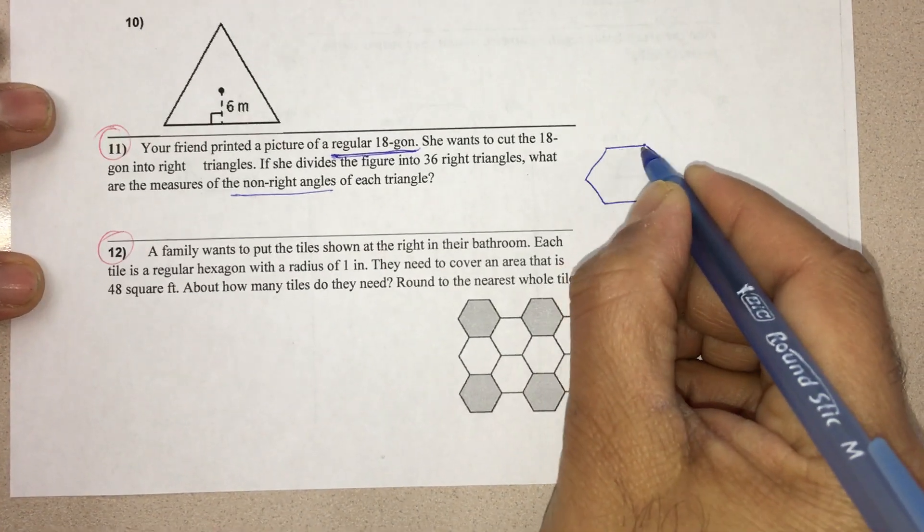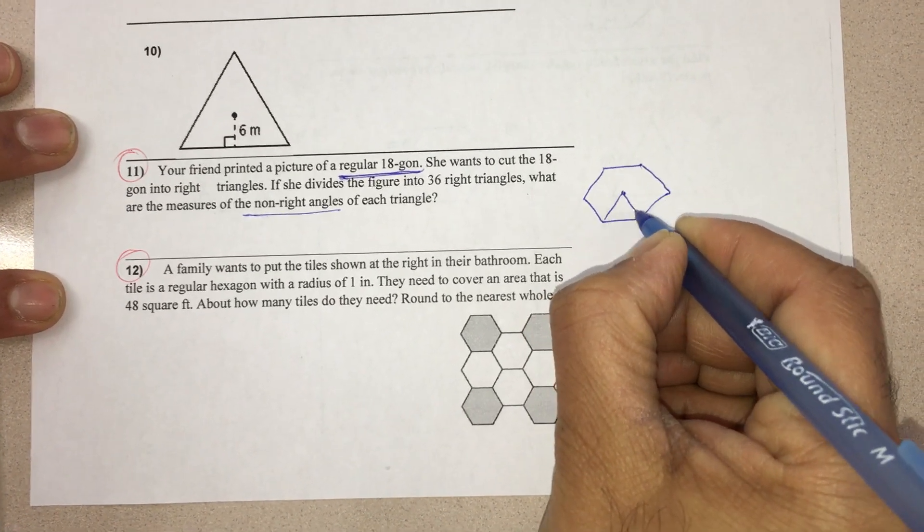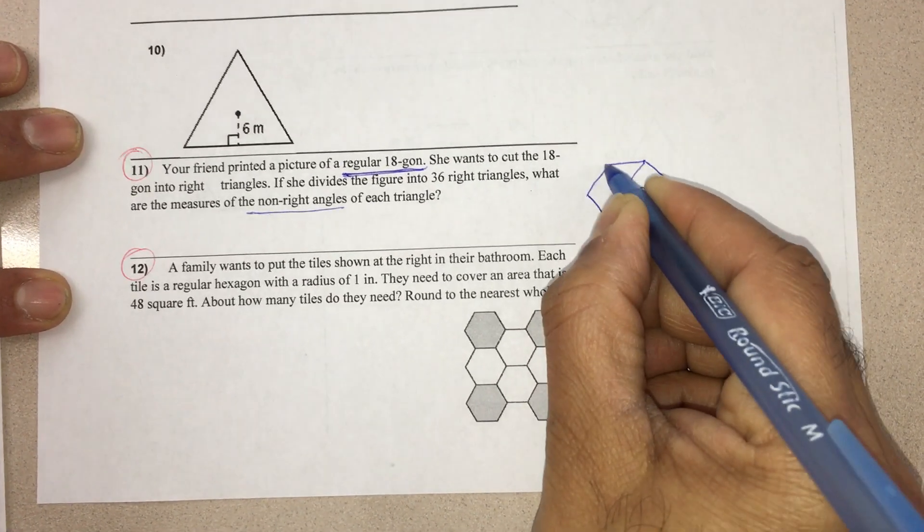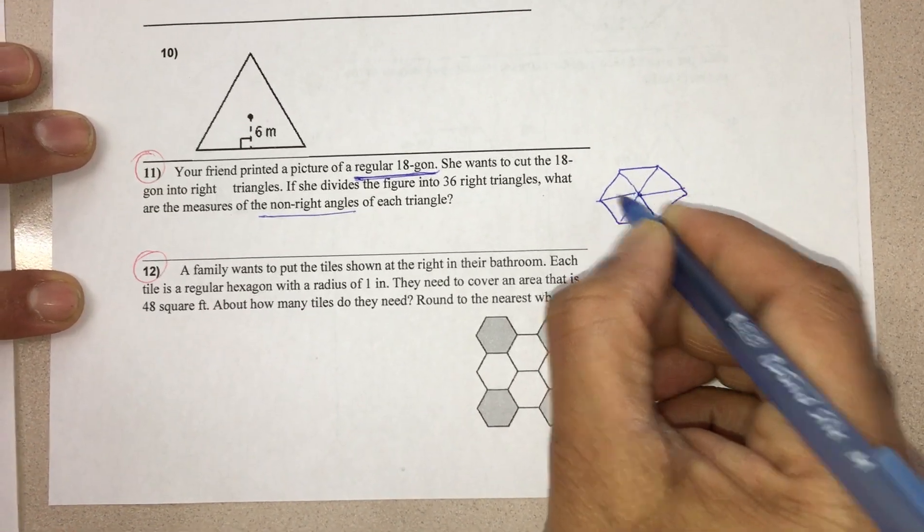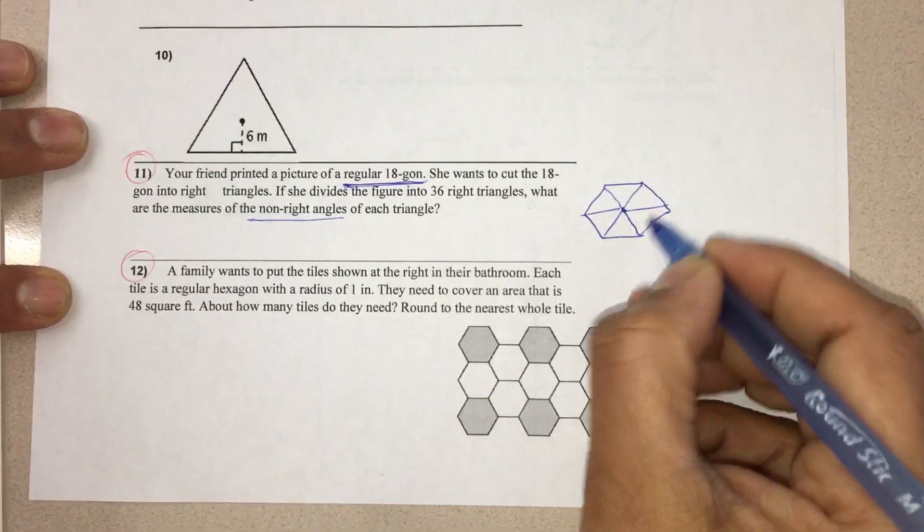For that, if I take a regular hexagon first, this is the center. If I join like this, I get all equilateral triangles: 1, 2, 3, 4, 5, 6. Since there are 6 sides, I got 6 equilateral triangles.